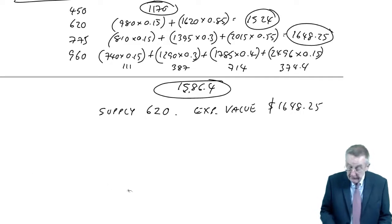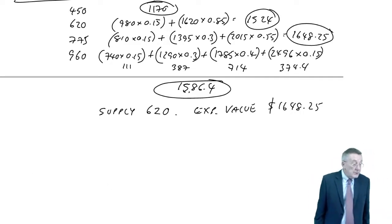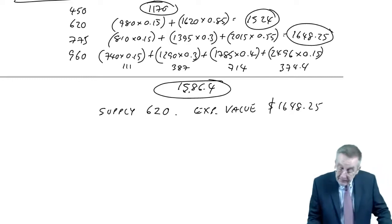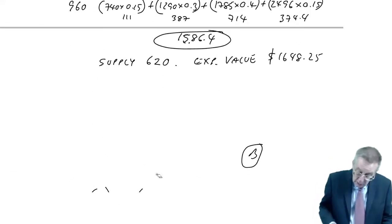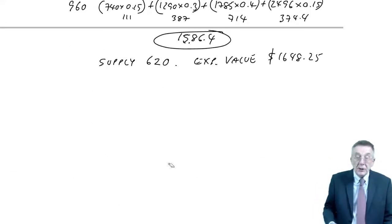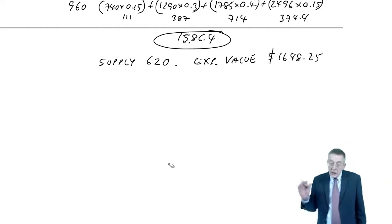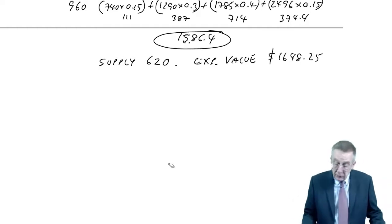Those are the expected values, and therefore, the one we choose, the one with the highest expected value. If we don't have perfect information, we will supply 775 and the expected return, the expected value, 1648.25. But I'm afraid we're not there yet. I mean, I think that was worth two marks on its own. But we need to know how much we'd pay for perfect information. Now, this is actually very quick, but only if you're sure you know what you're doing. And if you're not, go back and watch the lecture where I go through perfect information.